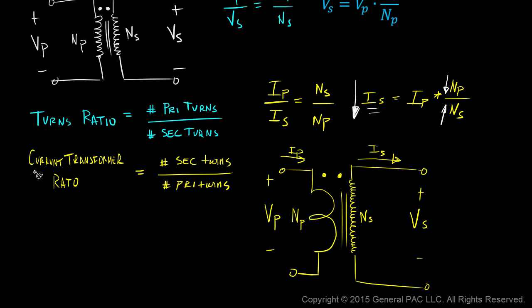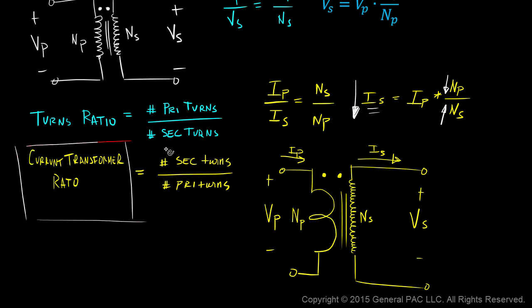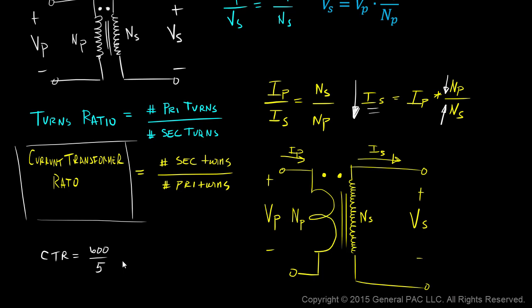The current transformer ratio is defined as the number of secondary turns divided by the number of primary turns. Quite often we see a CTR of 600 to 5, meaning 600 turns for the secondary winding and only 5 turns for the primary winding.